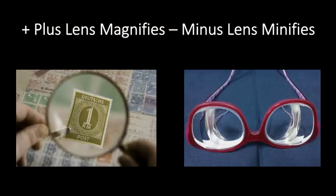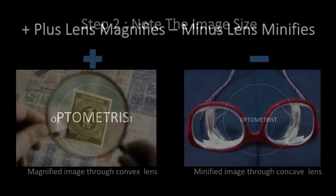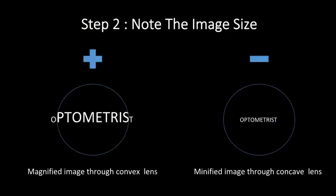This analogy can be used to identify the lens. To identify the lens, note the size of the image — note whether the image becomes larger, that is magnified, or smaller, that is minified, while looking through the lens. A magnified image means it is a convex lens, and a minified image means it is a concave lens. Thank you for listening.